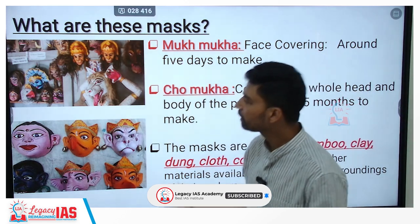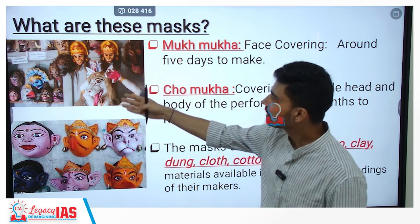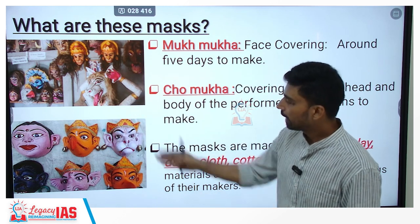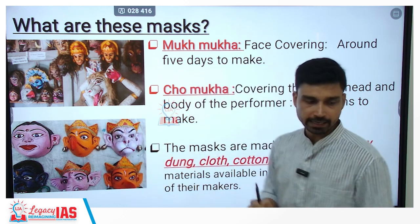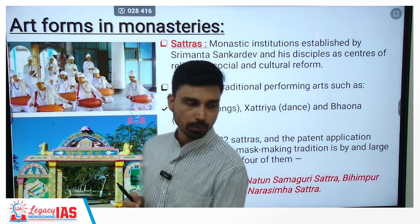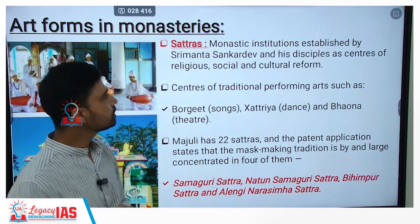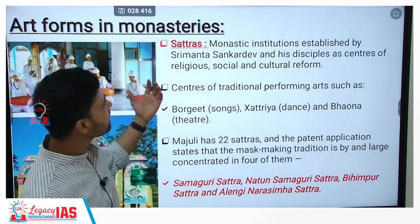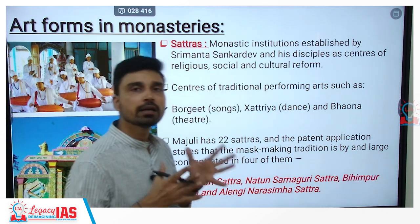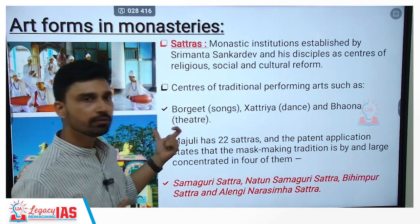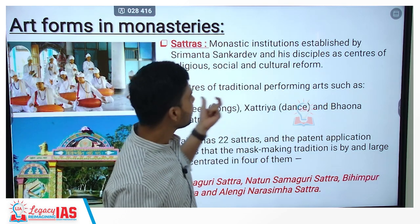Looking at pictures of these masks, the upper examples show the Chaumukha mask, which covers not only the face but the entire body of the performer. The lower examples show the Mukha Mukha mask, which is just a face mask, depicting entities like Lord Hanuman, Garuda, and others. The monasteries, locally referred to as Satras, are monastic institutions established by the 15th–16th century reformer Srimant Sankar Deva and his disciples as centers of religious, social, and cultural reform. Traditional performing arts such as Borgit, an Assamese folk song, Chhatria dance, and Bhavna theater are practiced here.